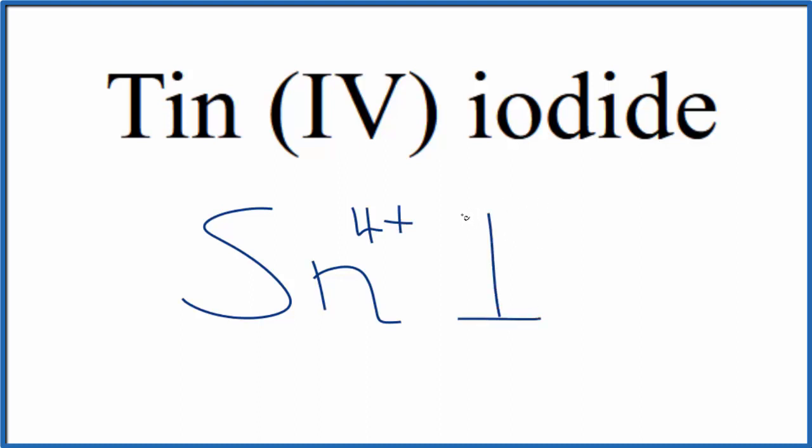We write I, and we know the iodide ion from group 17, sometimes called 7a, is 1-. Since tin is a transition metal and we have this nonmetal iodide ion, we need to make sure these charges balance.